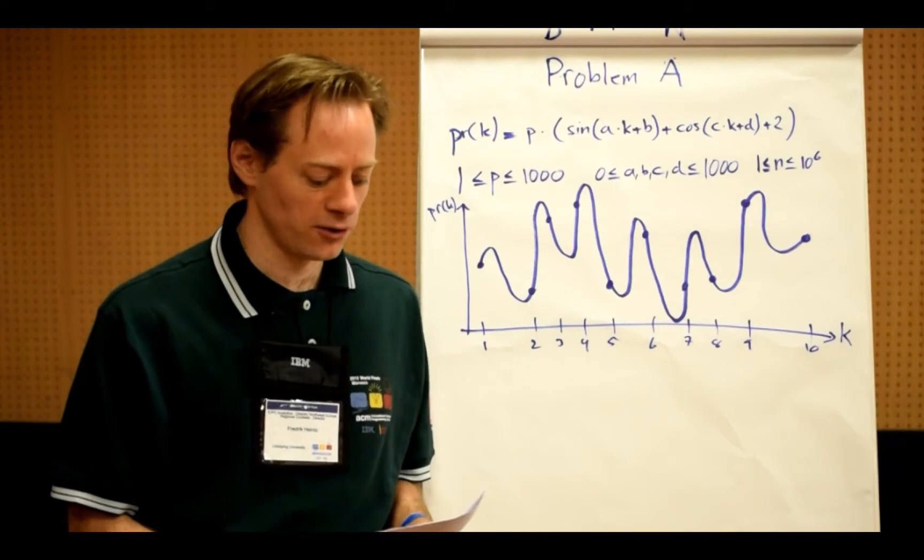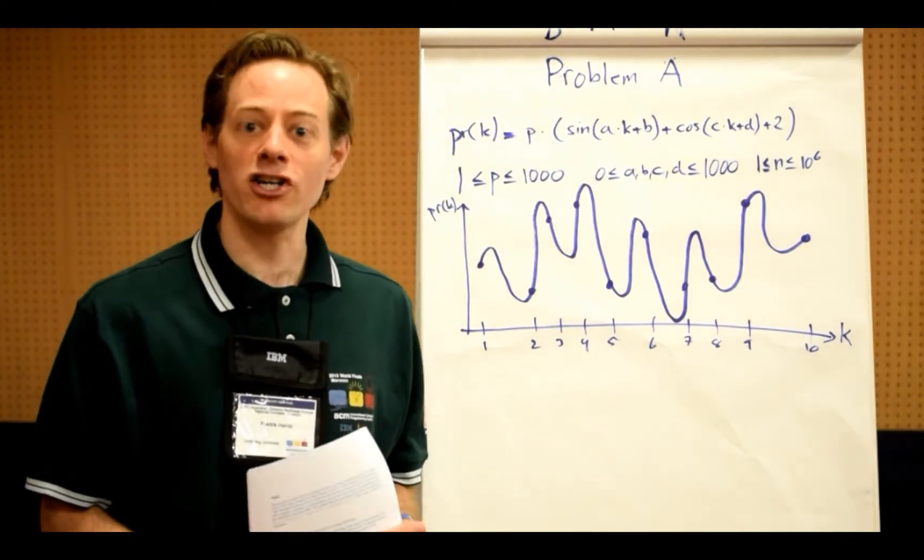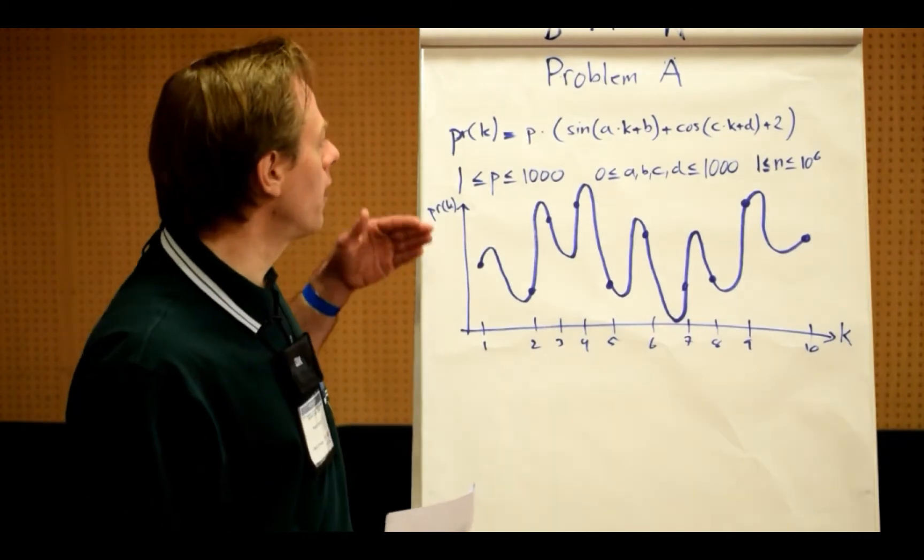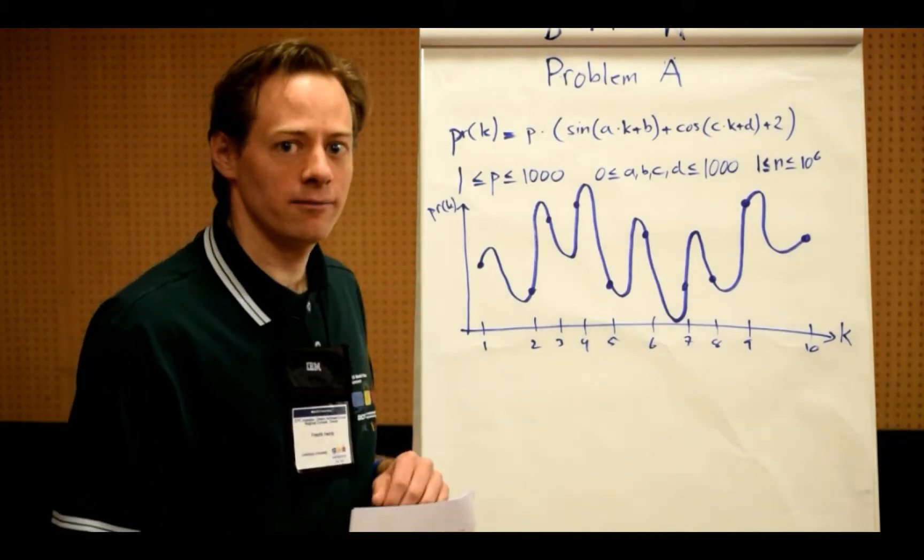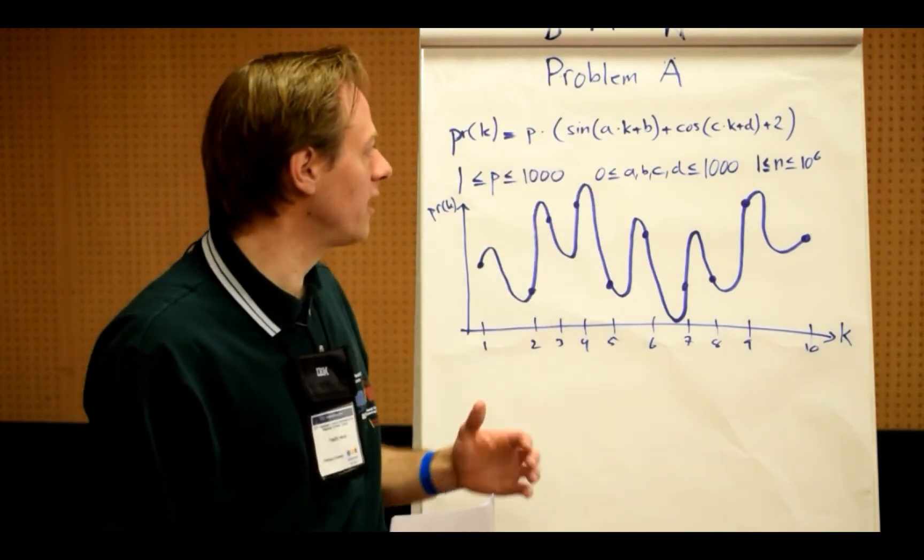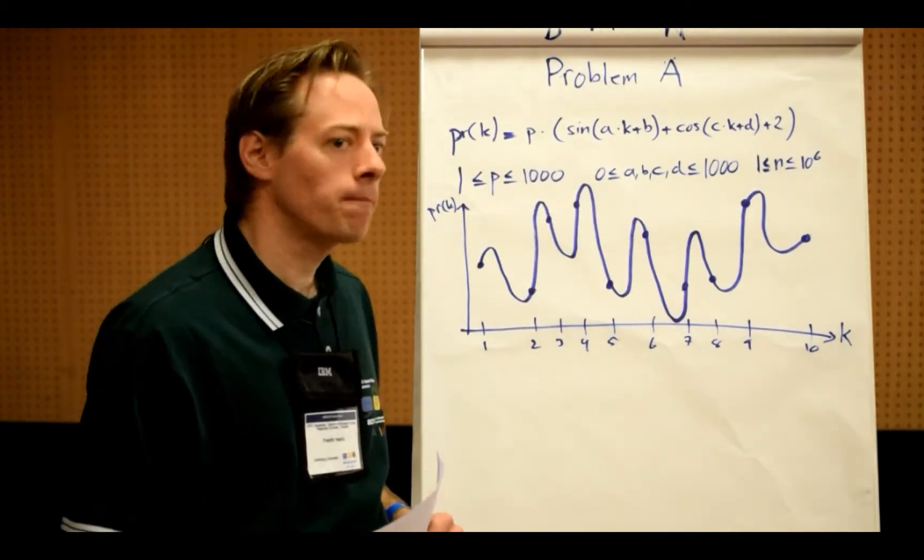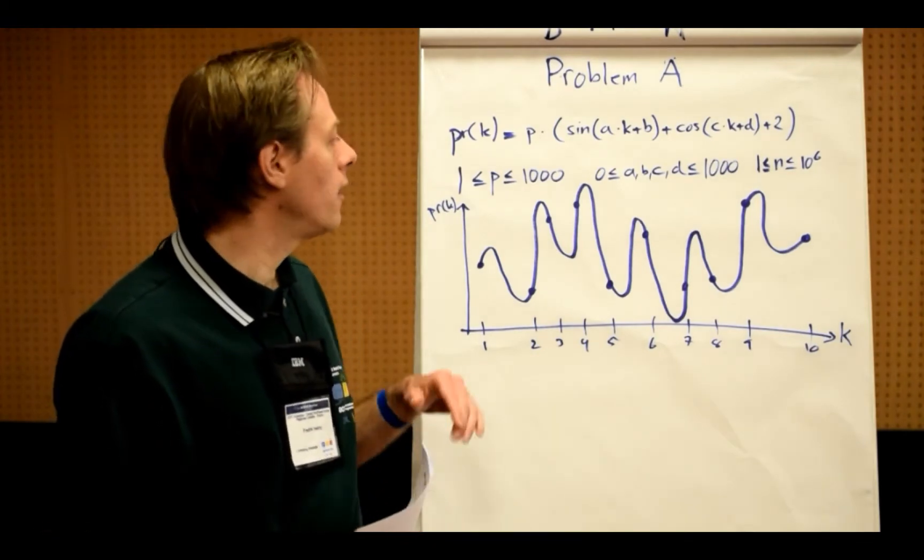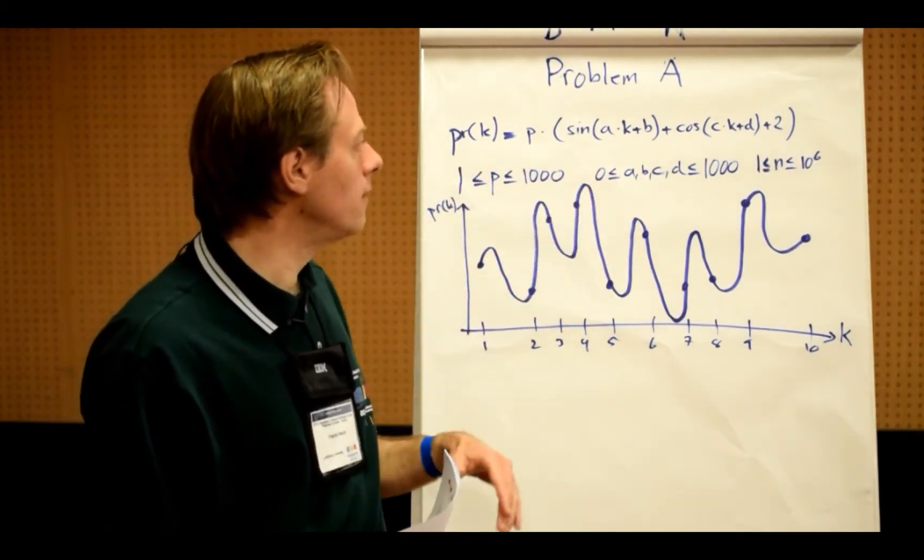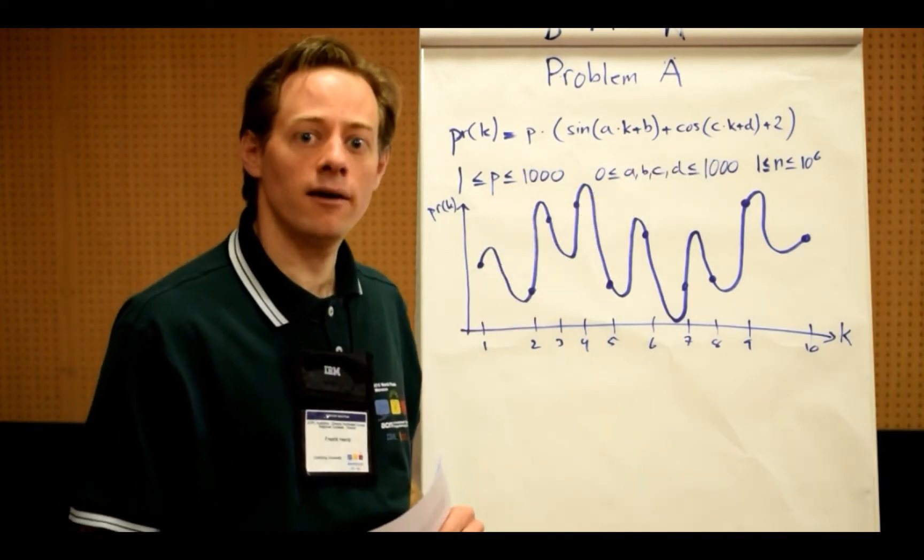Problem A is also called amalgamated artichokes and the problem is the following. You are given a price function defined as a sum of a sinus and a cosinus multiplied by a factor of P, and you are given the values P, A, B, C and D that you need for this price function.